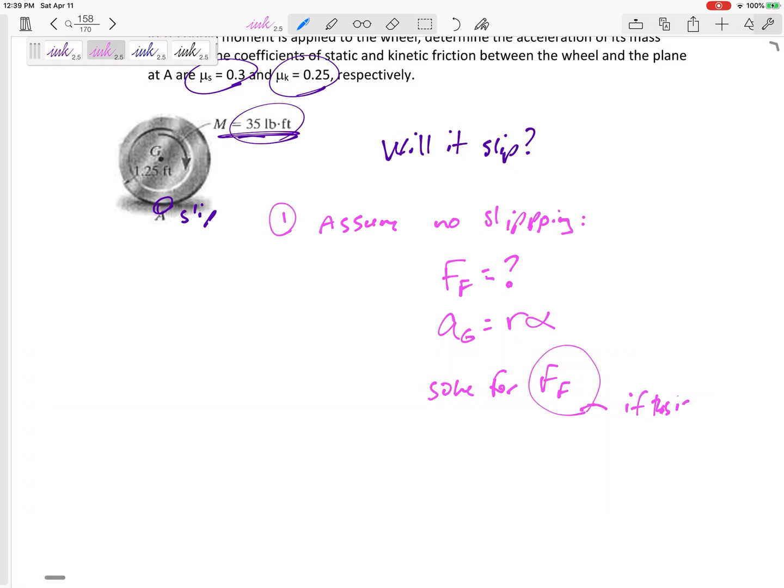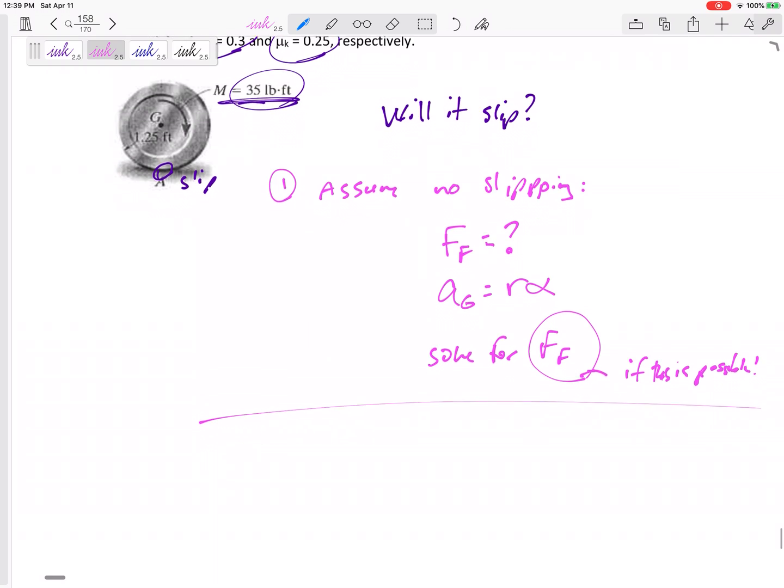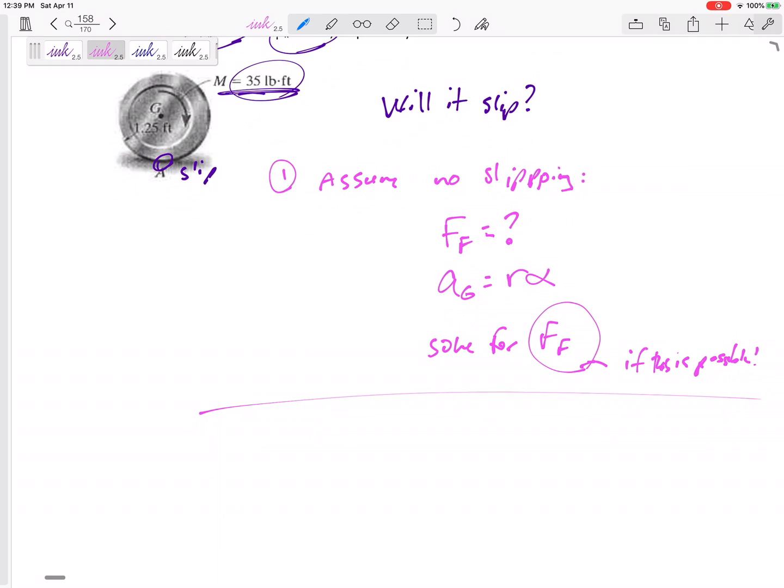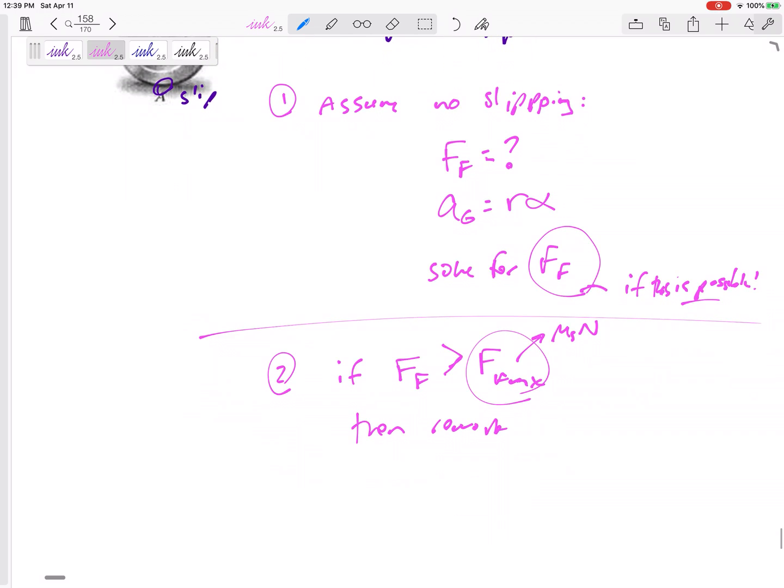If this is possible. If it is possible, then I'm done. That is my answer. I made an assumption it wasn't slipping. And even though it's not slipping, it is rolling. It is rolling without slipping. But if this is impossible, if force of friction is greater than the max, what's the max? Mu S N. Then I would rework.